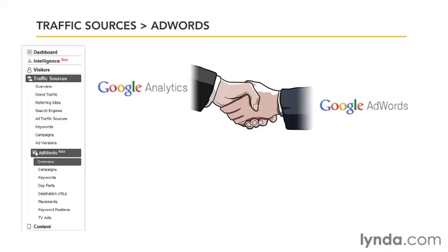Normally when we think of Google Analytics, we think of recording what happens after they click onto our site. But here, we'll also be able to pull down pre-click data, such as the number of times the ad was shown, click-through rate, et cetera, as well as cost data, so we can create return on ad spend type ROI reporting and much more. Having access to information others don't can make your advertising far more efficient than your competitors and maximize your budget.